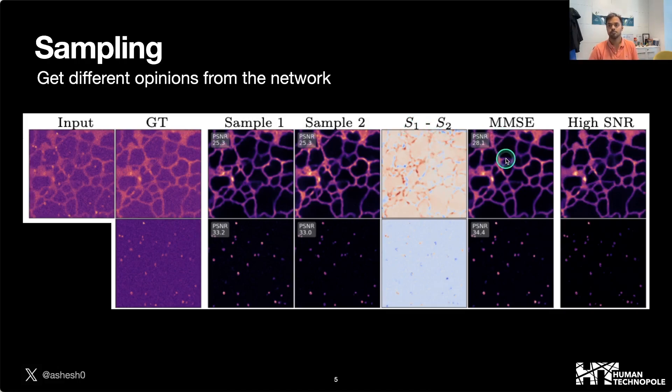In the second-to-last column we show the MMSE prediction, which is essentially the average of 50 predictions that we get from the input. As you can see, there is a difference between the different samples the network predicts, so indeed our network does give different opinions about the prediction.